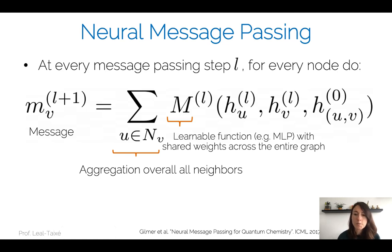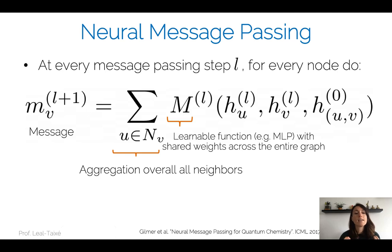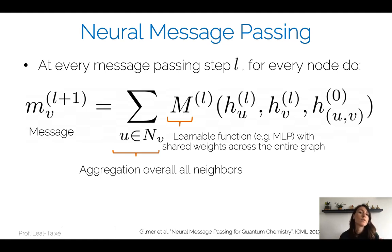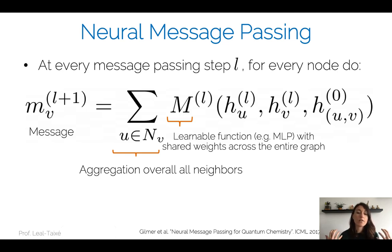I process these embeddings and then do the aggregation step — collecting all this information into one single message. For this, I need an operation which is permutation invariant and can work with any number of neighbor nodes. What I do is simply a summation: I sum all the information of my neighbors. It doesn't matter how many neighbors I have, and it doesn't matter the order of my neighbors. There is no natural order to impose. I just sum all of their embeddings and create this message, which is an aggregated embedding.